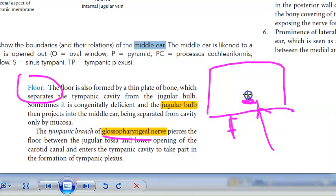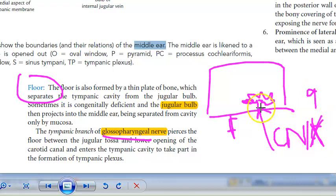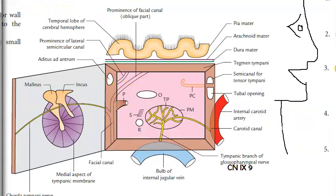The nerve involved is the glossopharyngeal nerve, which is cranial nerve 9. It pierces the floor between the jugular fossa and the lower opening of the carotid canal, enters the tympanic cavity, and takes part in the formation of the tympanic plexus.